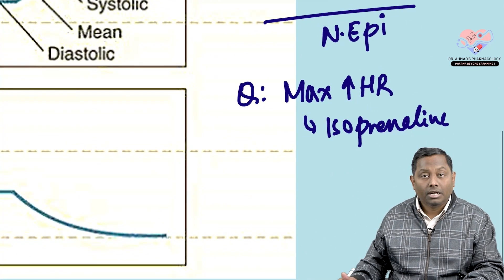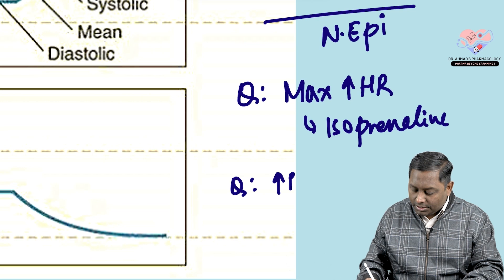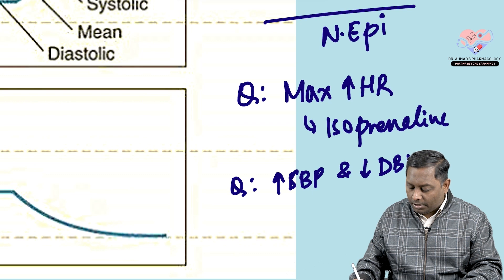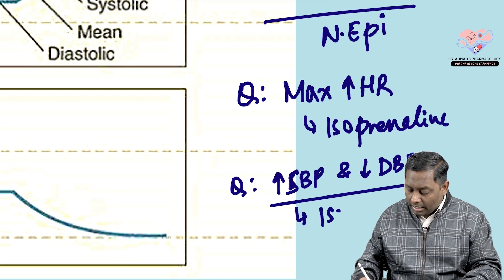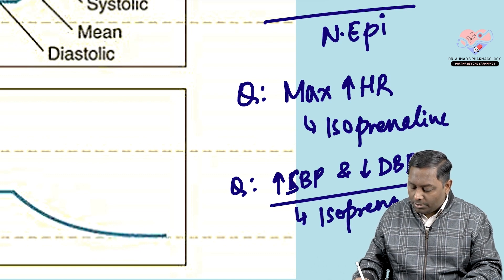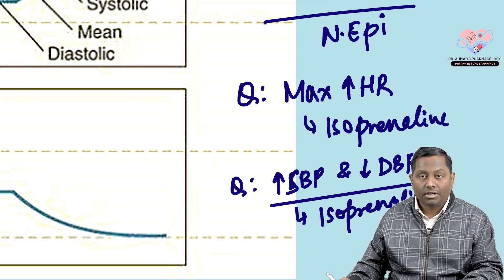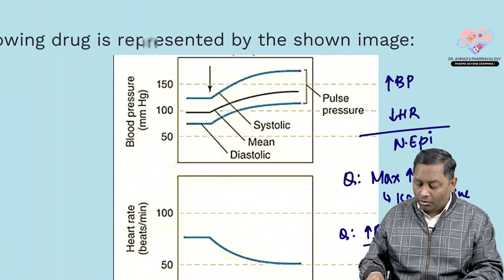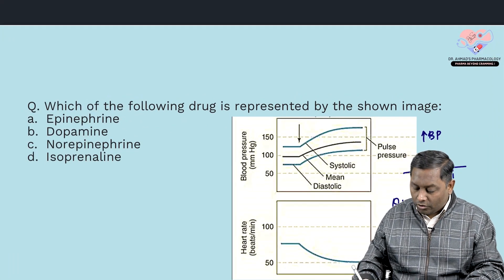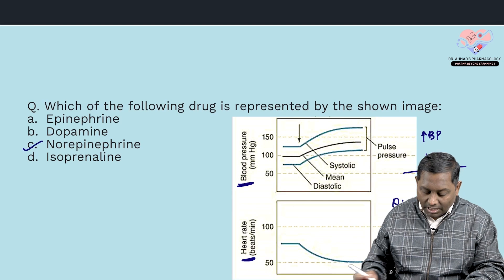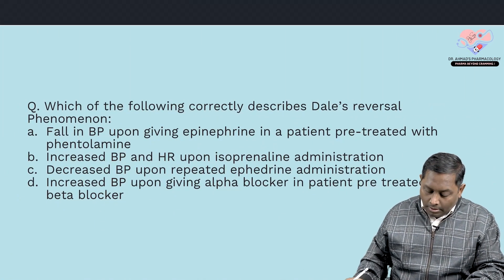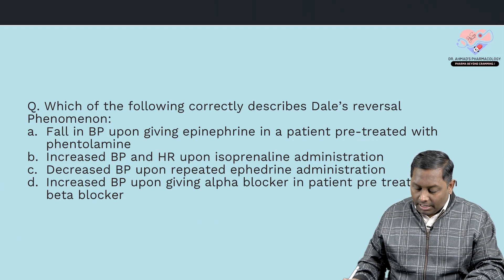For maximum increase in heart rate, the answer is isoproterenol. Isoproterenol also increases systolic blood pressure but decreases diastolic blood pressure — because it is a beta-1 and beta-2 agonist. Beta-1 raises systolic BP, and beta-2 causes vasodilation which decreases diastolic BP. So the image showing BP increased but heart rate decreased points to norepinephrine.